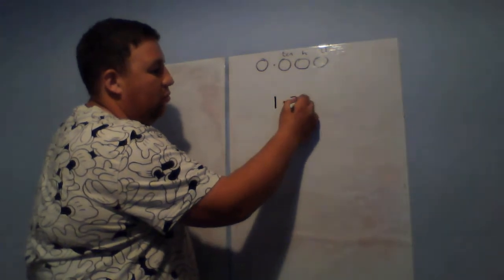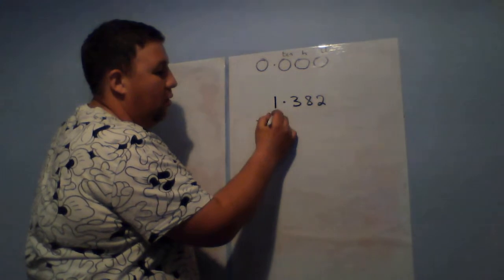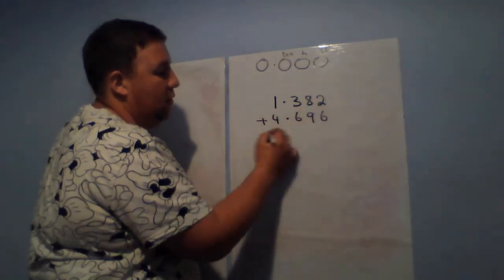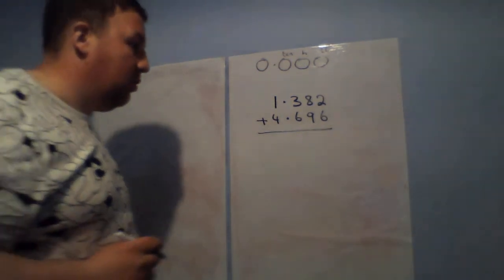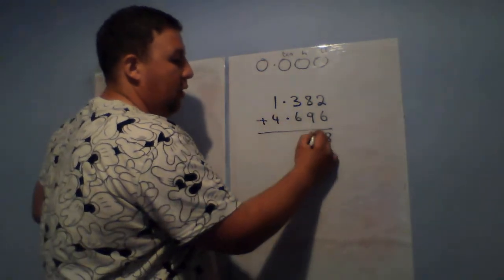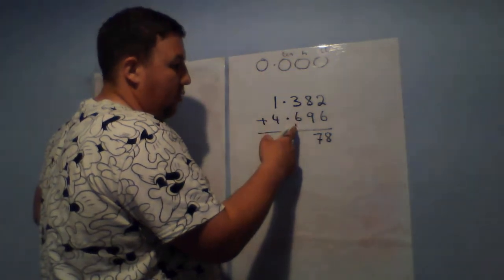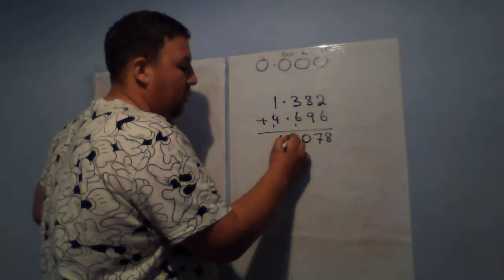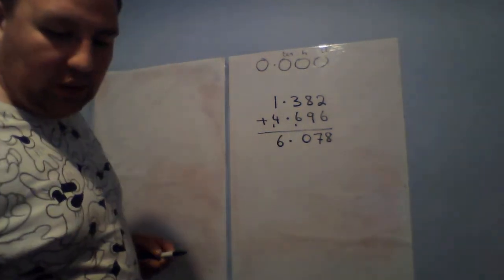So 1.382 plus 4.696. This is a nice straightforward one. Two plus six is eight, plus eight is seventeen — carry the one. Six and one is seven and three is ten — carry the one. Four and one is five and one is six. The answer is 6.078.